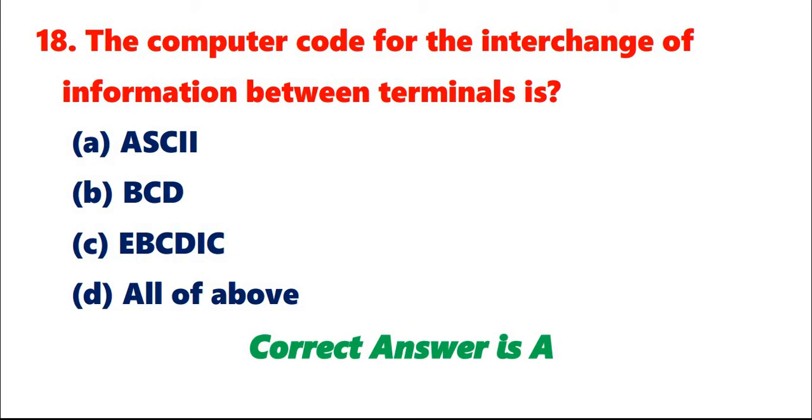Question 18: The computer code for the interchange of information between terminals is A. ASCII. B. BCD. C. EBCDIC. D. All of above. Correct answer is A.